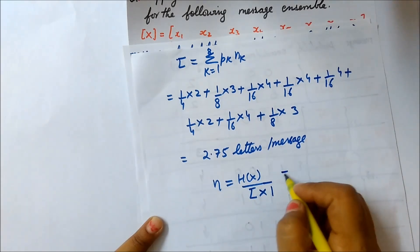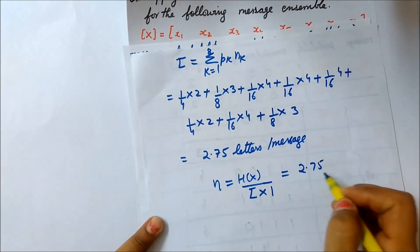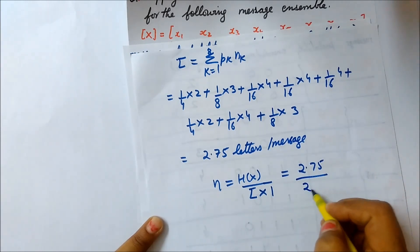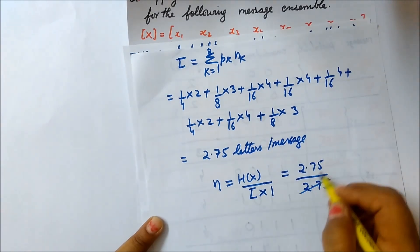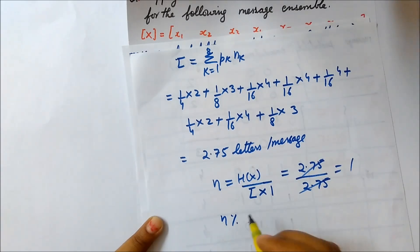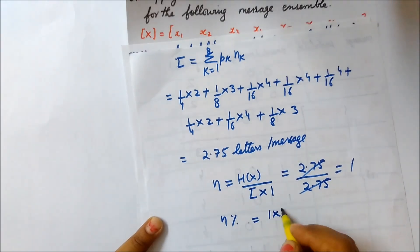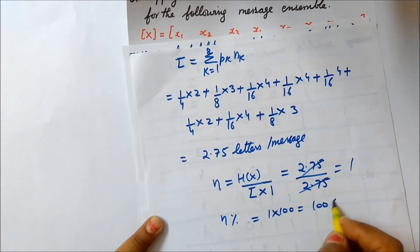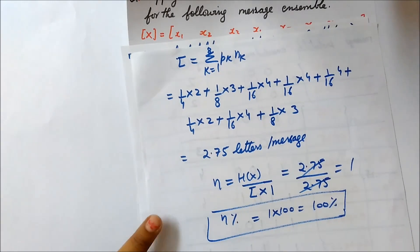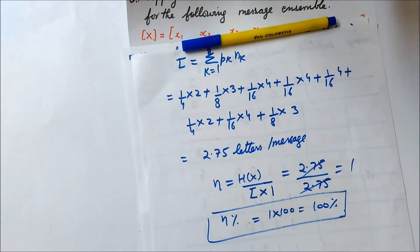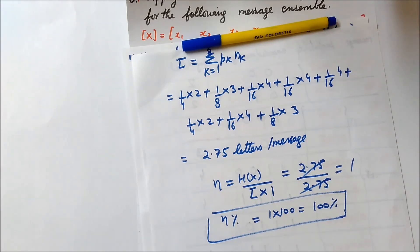Since log₂m = 1, η = H(x) / L̄ = 2.75 / 2.75 = 1. Therefore efficiency η = 100% for this particular question. In this way we can calculate the efficiency when a question is given. I will take another question in the next video on Shannon Fano coding which will be somewhat different from this one. Thank you and subscribe for further notifications.